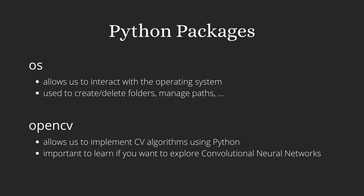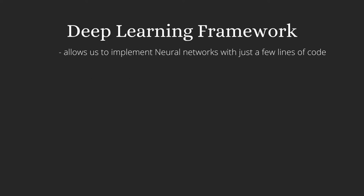And finally, the OpenCV library. OpenCV stands for Open Source Computer Vision. This library allows us to implement various computer vision algorithms using Python. If you do some projects using OpenCV, you will understand images at a fundamental level, which will be really important once you start getting into convolutional neural networks. Along with these packages, you will need to learn a deep learning framework which will allow you to implement neural networks with just a few lines of code.